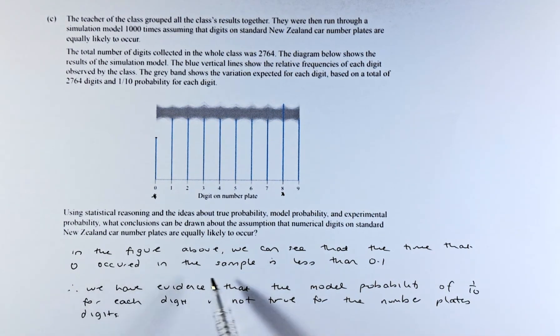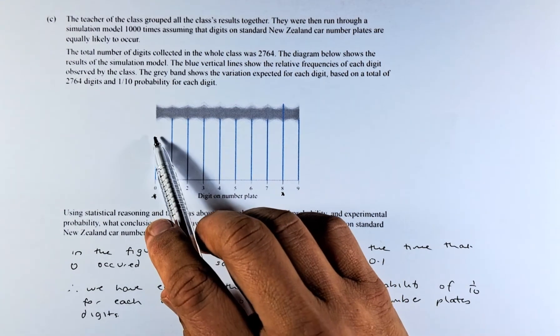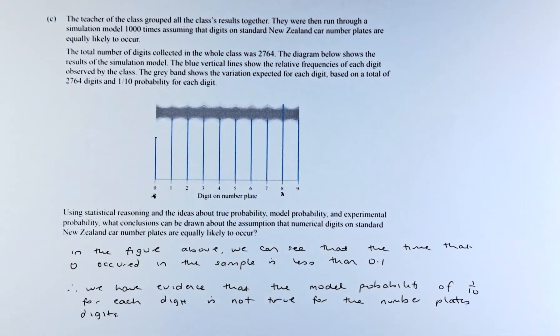We can see that the time that 0 occurred in the sample is less than 0.1. If 0.1, you reach somewhere here. So we have evidence that the model probability of 1/10 for each digit is not true for the number plates digits.